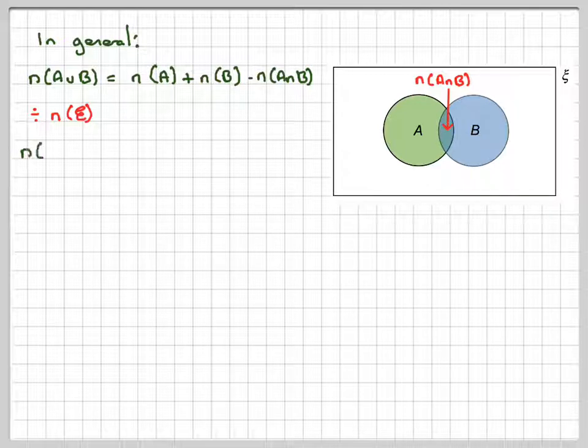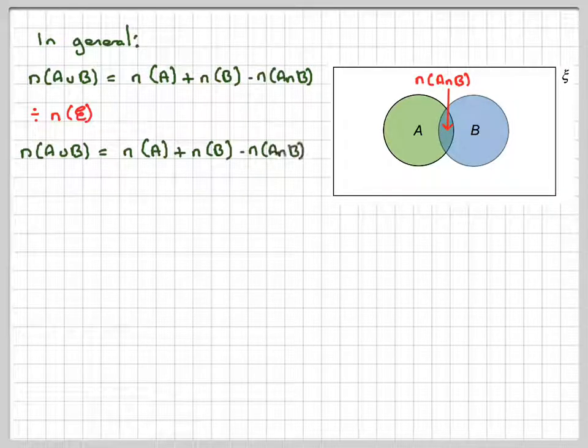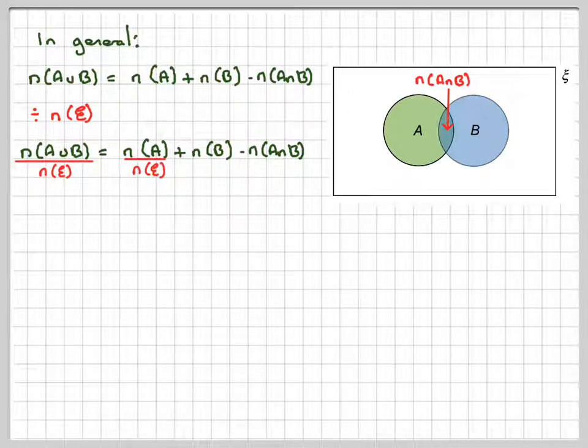If we're going to apply that to probability, we have to divide each of those by the universal set, the number in the universal set.